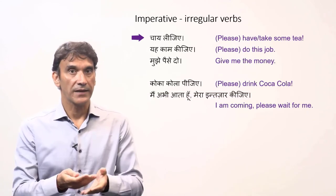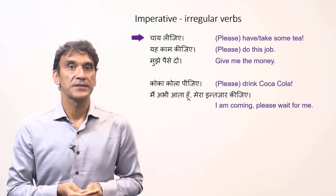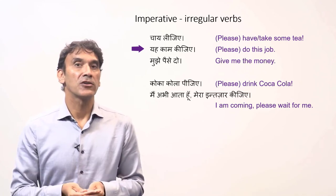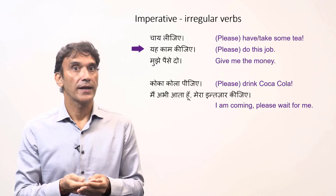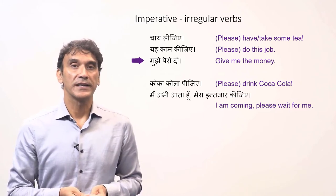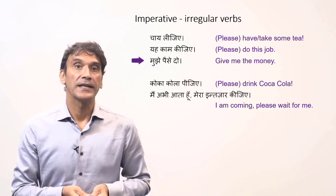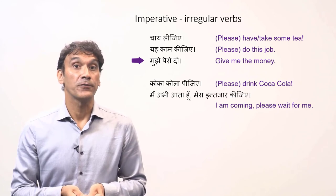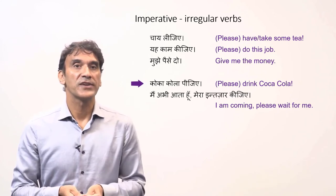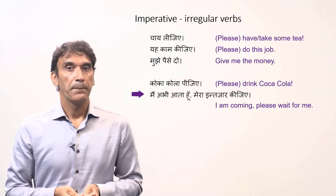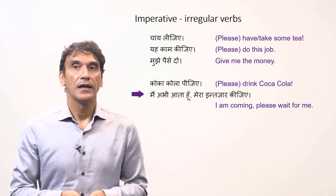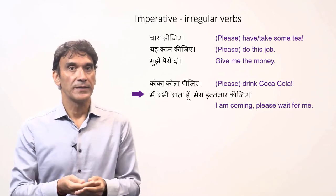'Chai lijiye' — please have/take some tea. 'Yeh kaam kijiye' — please do this job (the irregular form 'kijiye,' not 'kariye'). 'Mujhe paise do' — give me the money ('deena' imperative for 'tum' is 'do'). 'Coca-Cola pijiye' — please drink Coca-Cola. 'Main abhi aata hoon, mera intezaar kijiye' — I am coming, please wait for me.